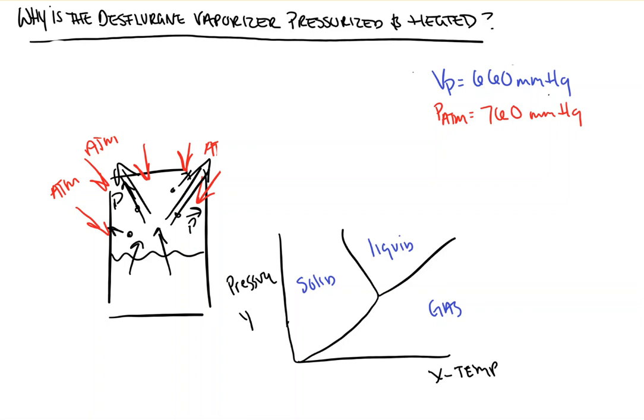boiling point is as your vapor pressure gets closer to or equals your atmospheric pressure. And, well, the vapor pressure of desflurane is pretty close. So, what this means is at room temperature, the vapor pressure of desflurane is almost equal to the atmospheric pressure, which means that at room temperature, desflurane wants to boil or become a vapor.